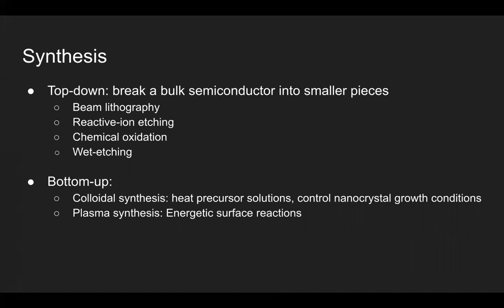Bottom-up methods, on the other hand, build quantum dots from the ground up using precursors. There's two main bottom-up methods that are used for quantum dot synthesis, colloidal synthesis and plasma synthesis. Colloidal synthesis involves heating up precursor solutions and then controlling the temperature and the crystallization time in order to adjust the concentration of the quantum dots as well as the size. Plasma synthesis, on the other hand, uses plasmas and involves energetic surface reactions.